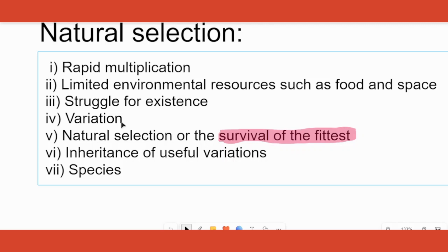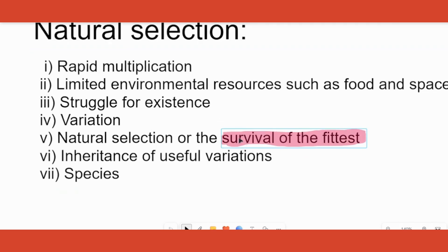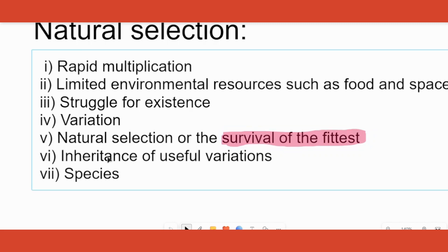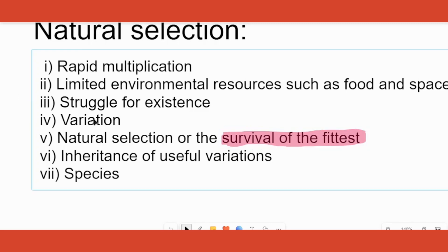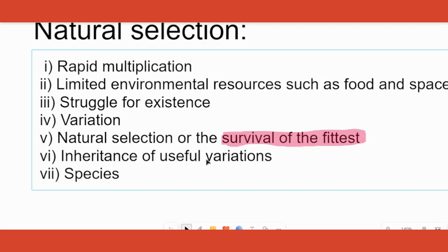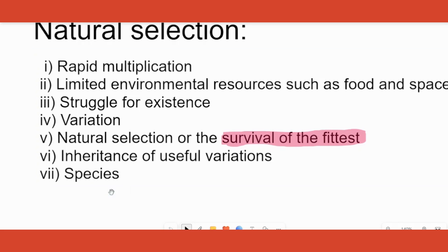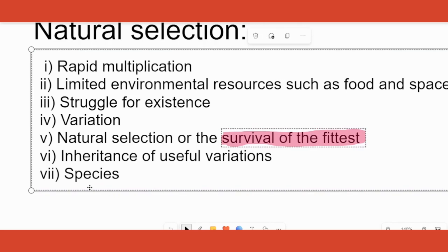Progenies of the same type will be slightly different from each other — that is called variation. Whichever organism has a suitable variation for adapting to the current environment will survive, and that is called survival of the fittest. Those useful variations are then carried on to the next generation through inheritance, eventually giving rise to new species — a process called speciation. These are the points to write under the heading Natural Selection.